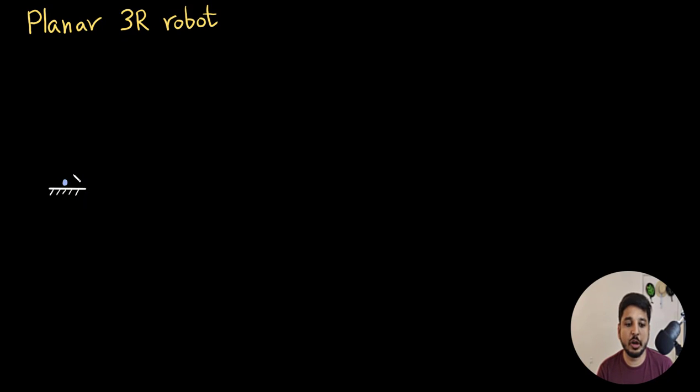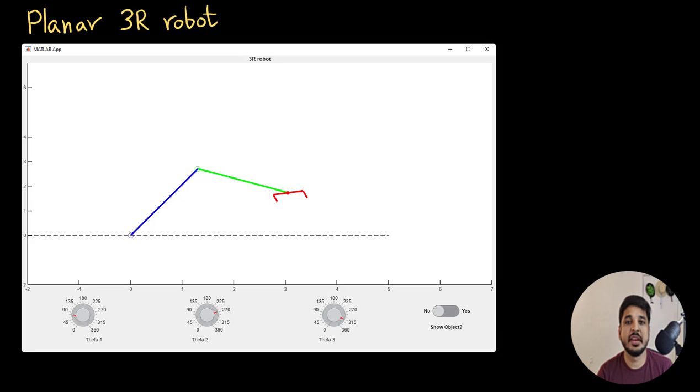It is a 3 degree of freedom robot in which there are two links of 3 units and 2 units respectively, and there is an end effector. Each joint of the link has a motor attached to it which can rotate and the robot parameters are theta1, theta2 and theta3.